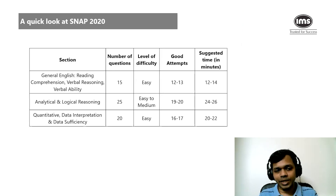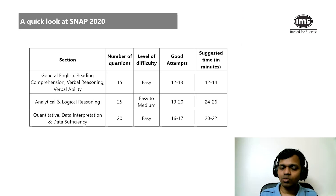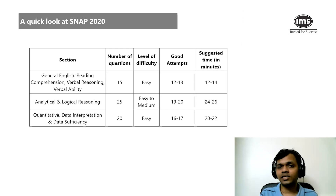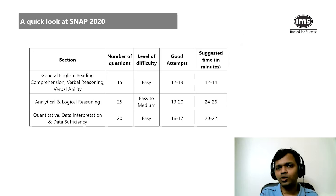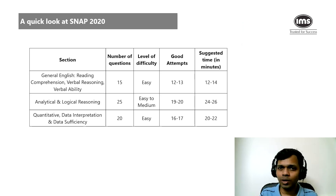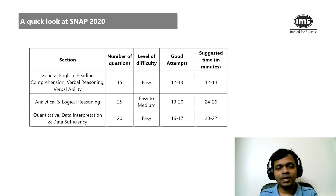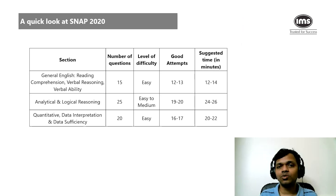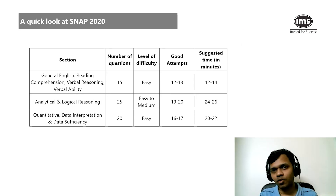Now let's have a quick look at SNAP 2020. The general English area was supposed to have RC, verbal reasoning, and verbal ability, but there were no RCs last year. That doesn't mean they won't have an RC this time. The number of questions was 15, and the good attempts would be around 12 or 13. The overall difficulty was easy. The suggested time is about 12 to 14 minutes — ideally even 10 to 11 minutes to save time for other sections.